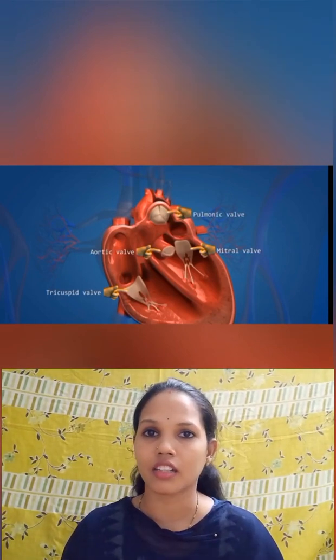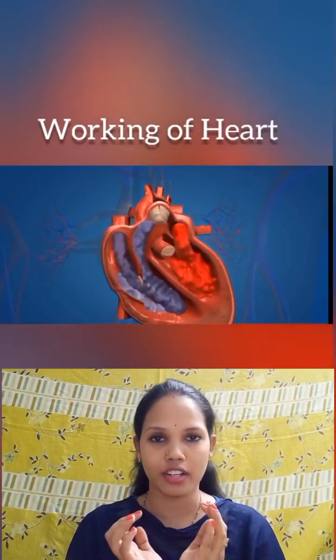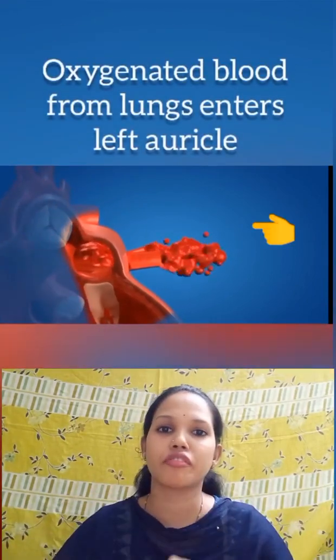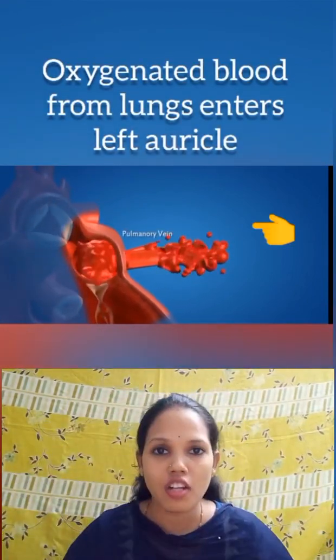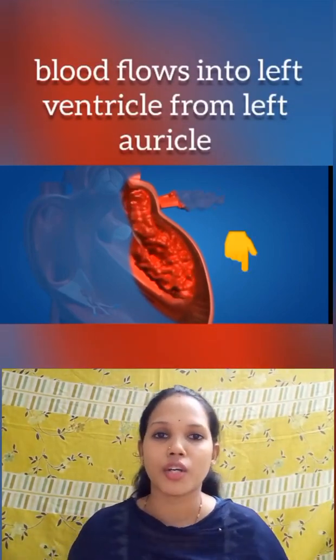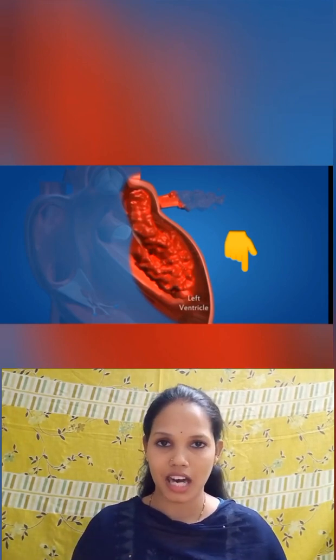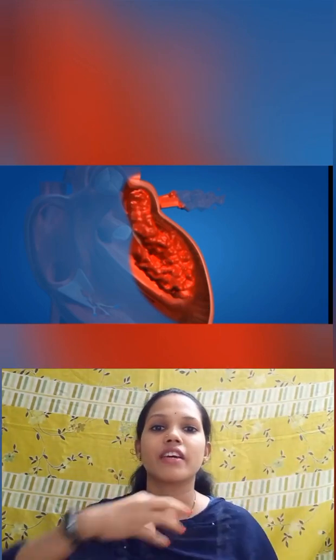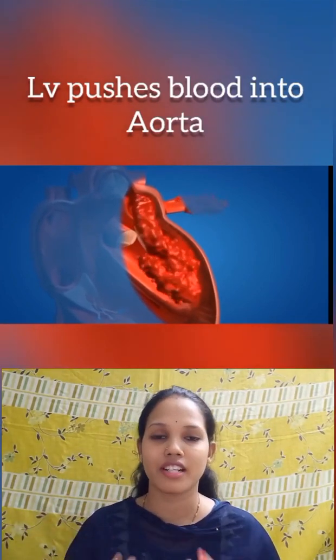Now let's talk about the working of the heart. First, oxygenated blood enters from the lungs into the left auricle. Upon contraction, by the opening of the mitral valve, blood falls into the left ventricle. Upon contraction of the left ventricle, by the opening of the aortic valve, blood is pushed into the aorta, the greatest artery in the body. This oxygenated blood from the aorta is supplied to all the upper and lower parts of the body.